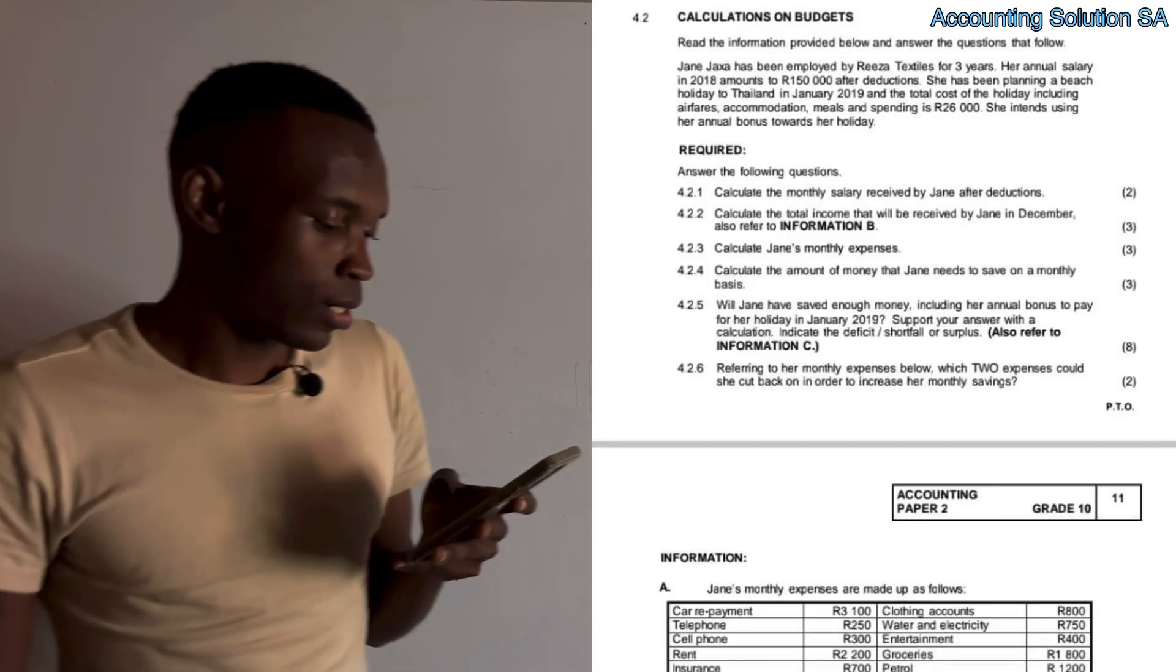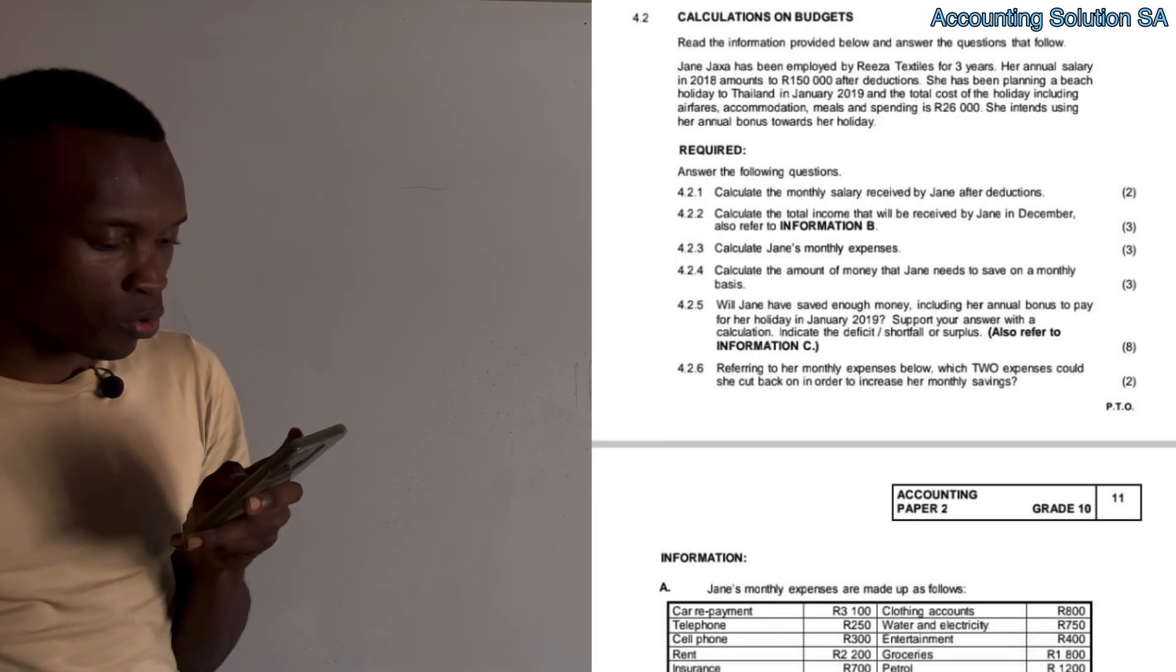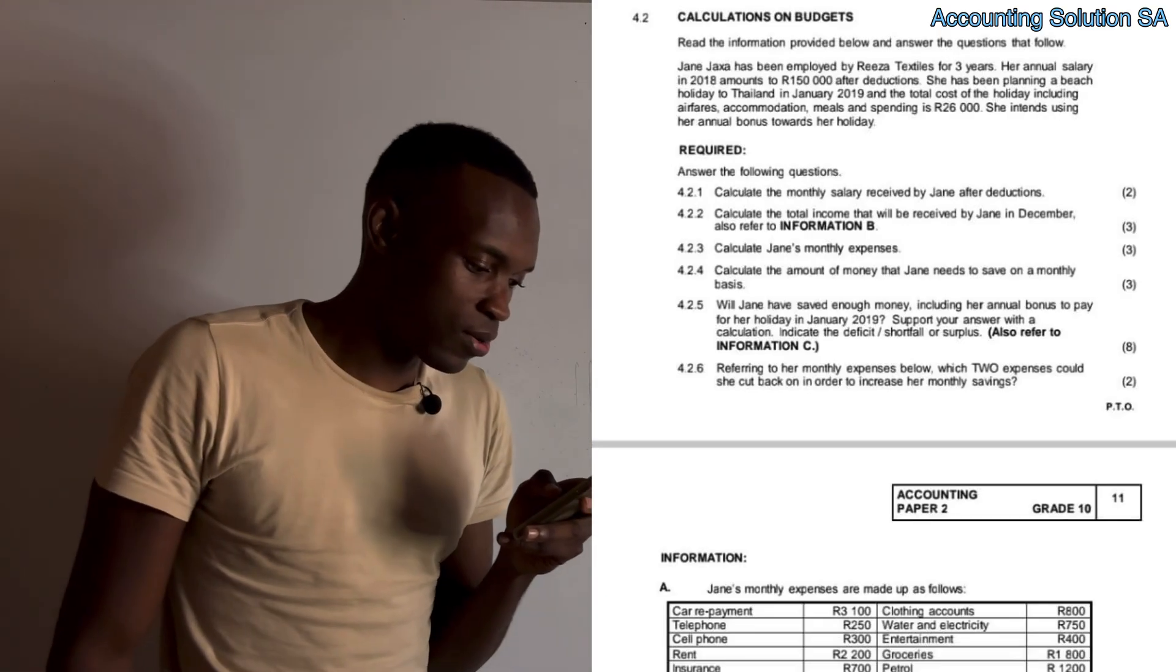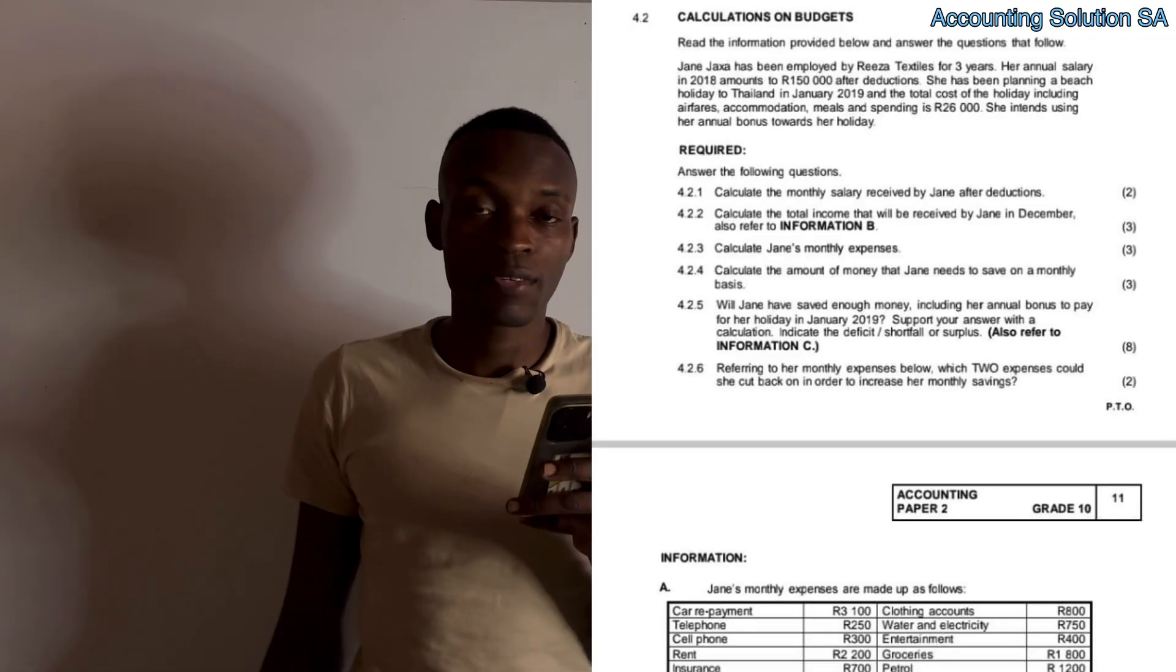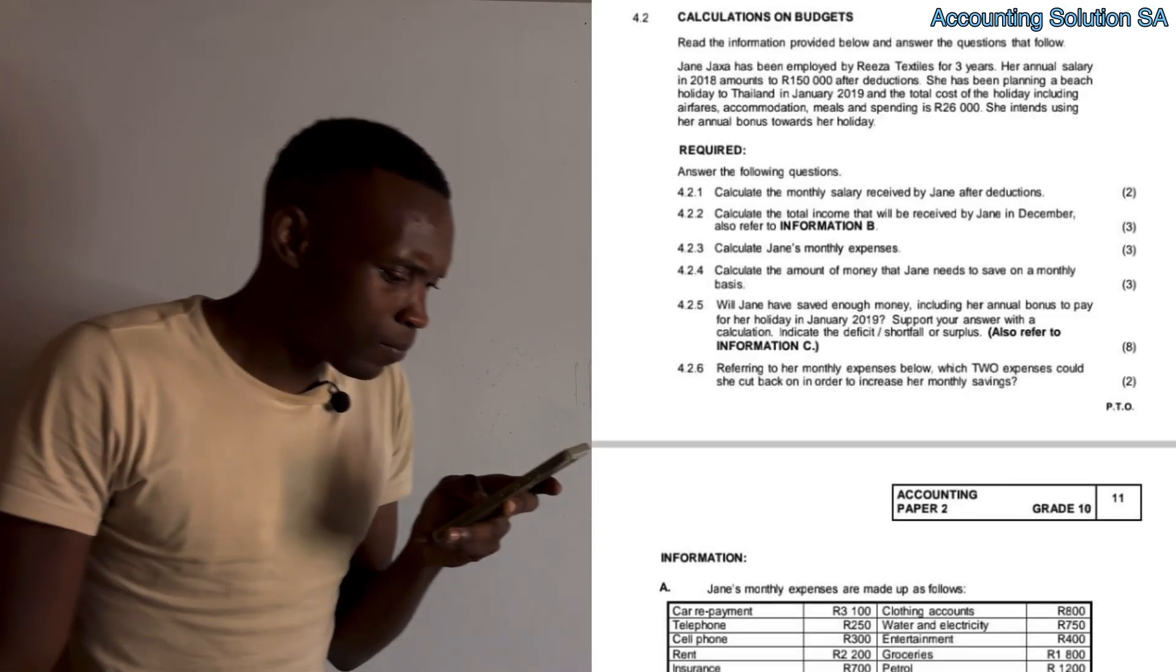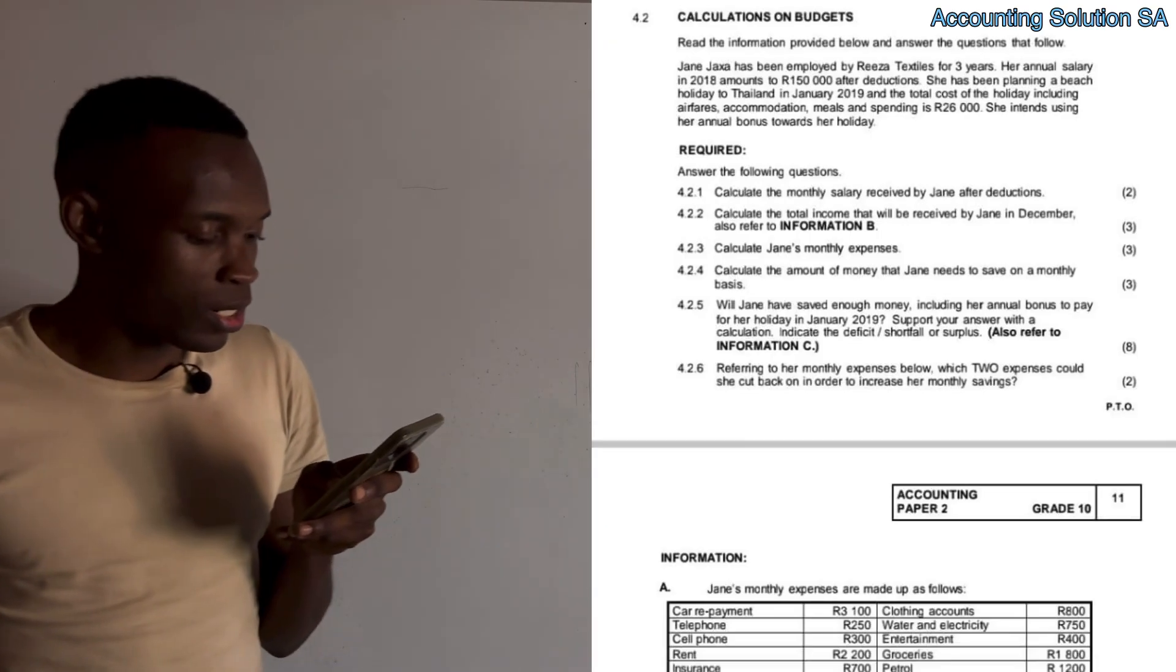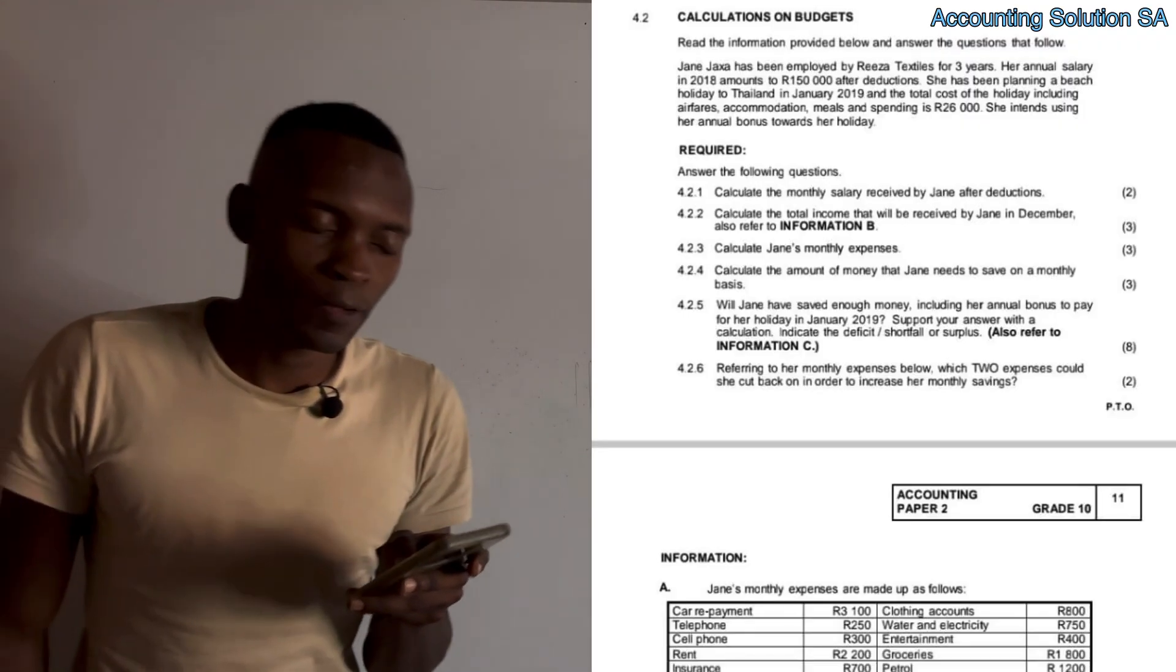I took one of the previous question papers. Let's quickly start the calculation of the budget. Read the information provided below and answer the questions that follow. Jane Jasha has been employed by Razor Textile for three years. Her annual salary in 2018 amounted to R150,000 after deductions. She has been planning a beach holiday to Thailand in January 2019, and the total cost of the holiday including airfare, accommodation, meals and spending is R26,000. She intends using her annual bonus towards the holiday.